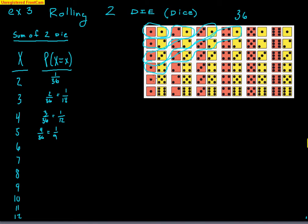A sum of 6: you could have 1-5, 2-4, 3-3, 4-2, or 5-1 — that's 5 ways, so 5/36. A sum of 7: 1-6, 2-5, 3-4, 4-3, 5-2, 6-1 — that's 6 ways, so 6/36. Looking at the chart really makes it easy to see all the outcomes.